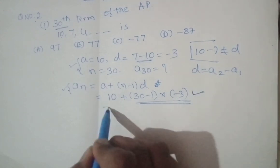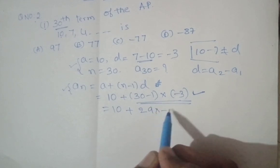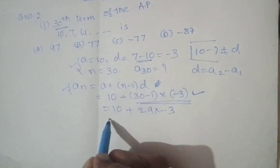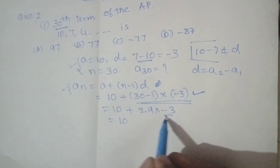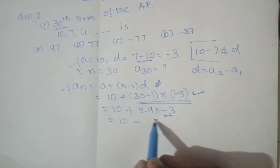Now look at this: 10 plus 30 minus 1, which is 29, into minus 3. This equals 10 plus - and this one gets multiplied - 29 times 3 is 87, so minus 87.